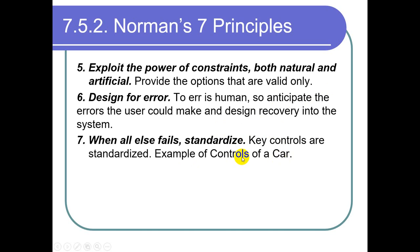A good analogy is car controls: the accelerator, brake, clutch, and gear are standardized. A user who has driven one car can drive another manual car, even if other controls like lights or horn differ. Similarly in software, things like Login, Logout, and Forgot Password should be standardized so any user can understand your software easily. That is all about Norman's 7 principles — please also study these from the book with examples.